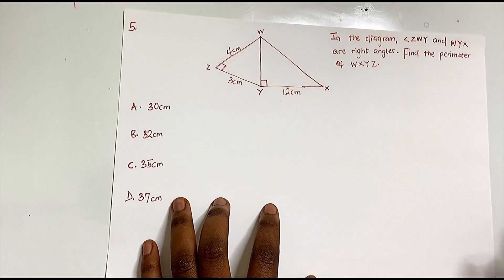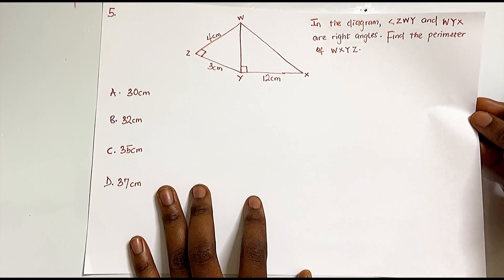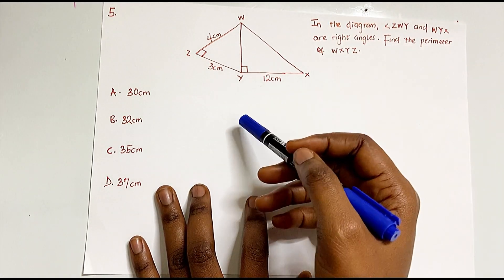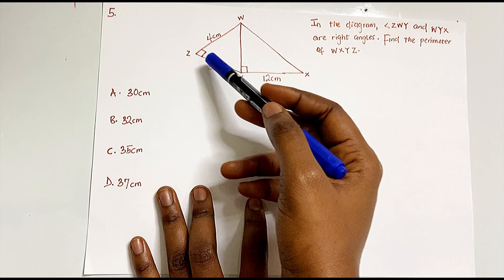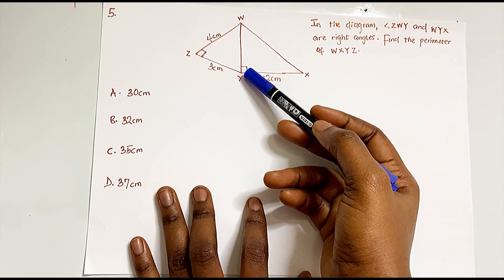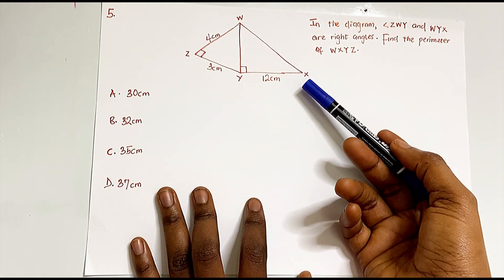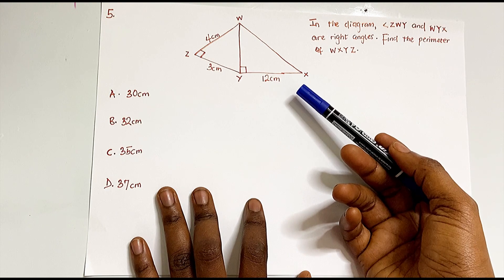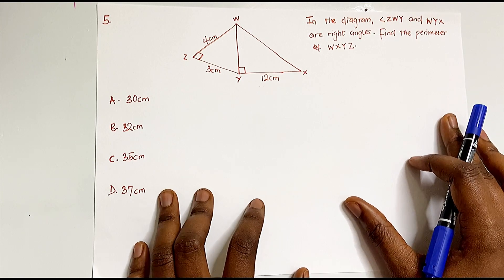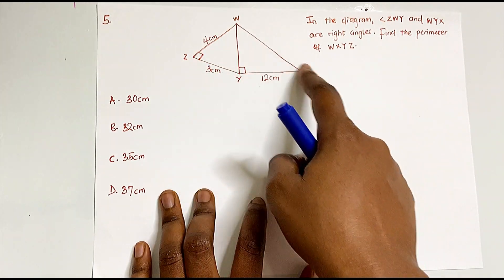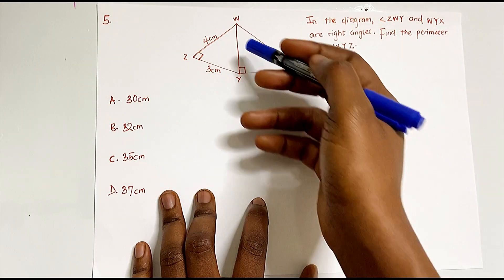Question five shows an interesting diagram. It states that angle ZWY is a right angle and angle WYX is also a right angle. We need to find the perimeter of figure WXYZ — the addition of all its sides. We have some side lengths but not all; the missing sides must be found using right-angle triangles.